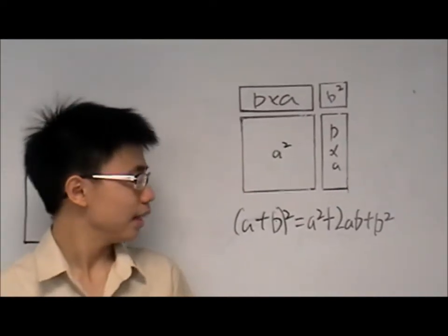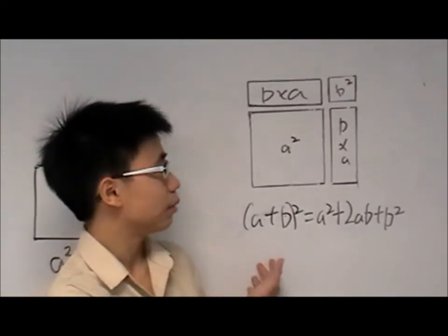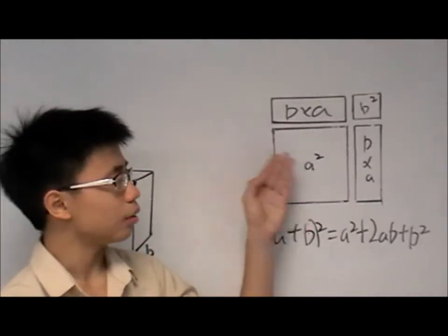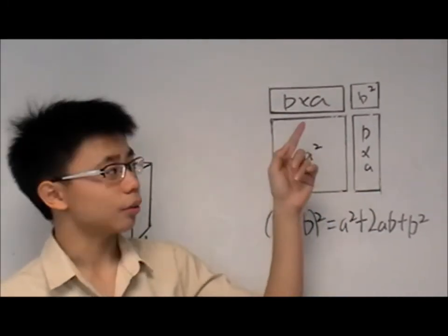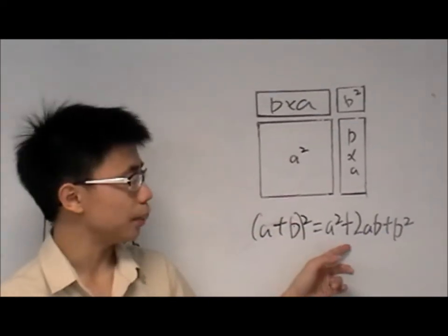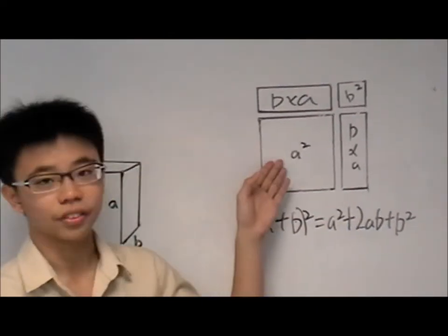Now, I will be explaining how the expansion of A plus B square comes about. As you can see, there's an A square down here, and a BA as well. Two BA's and one B square. So, in this case, the expansion is A square plus 2AB plus B square, which corresponds with our physical drawing.